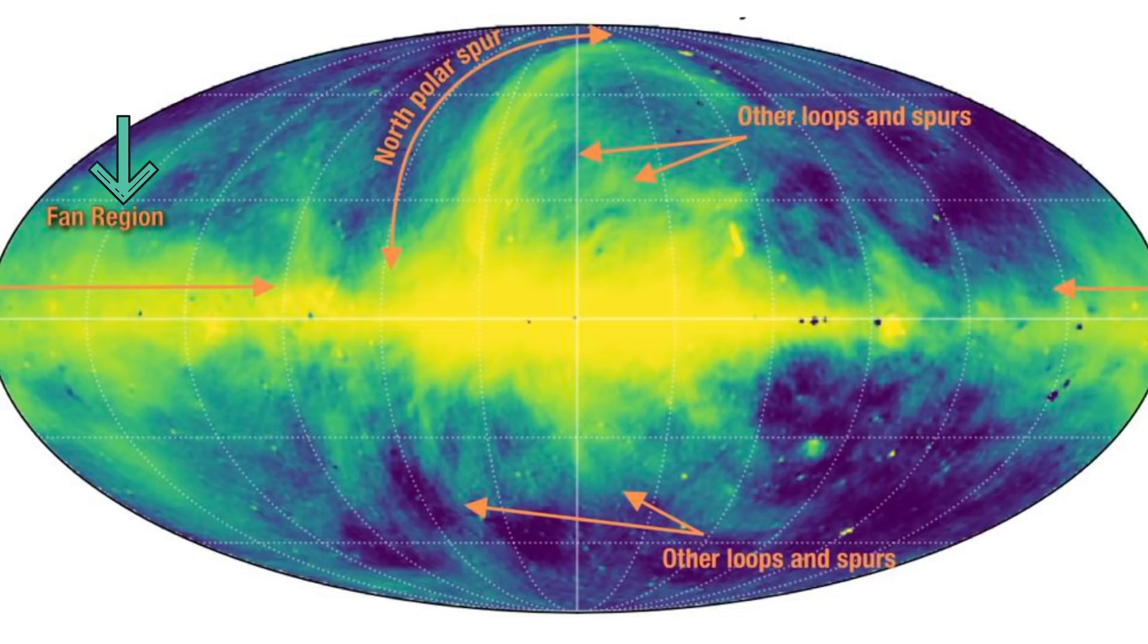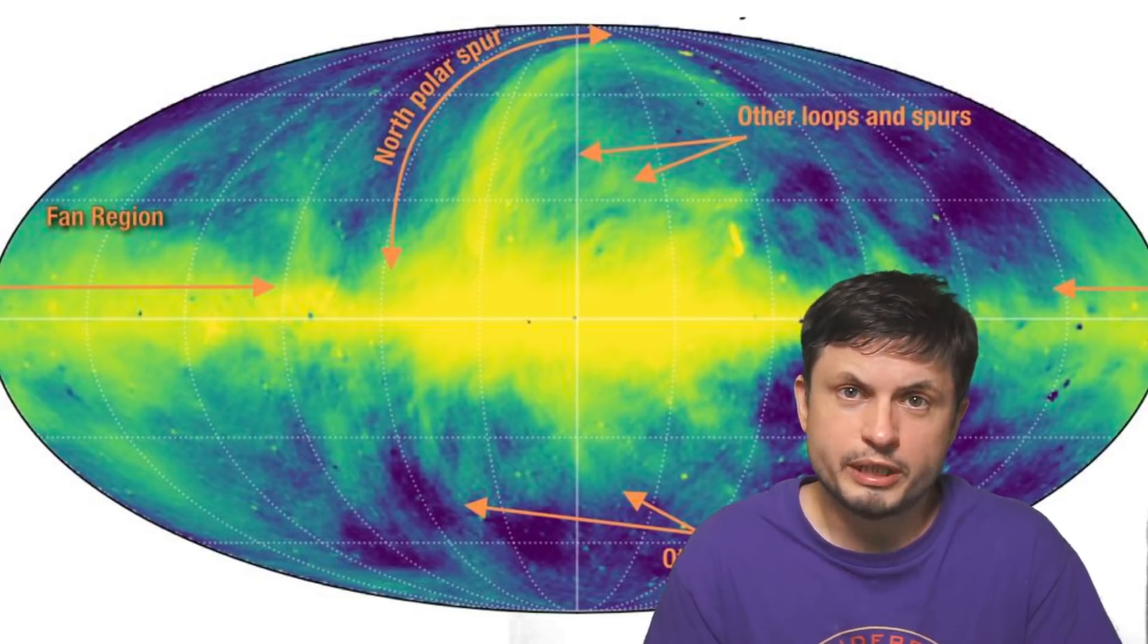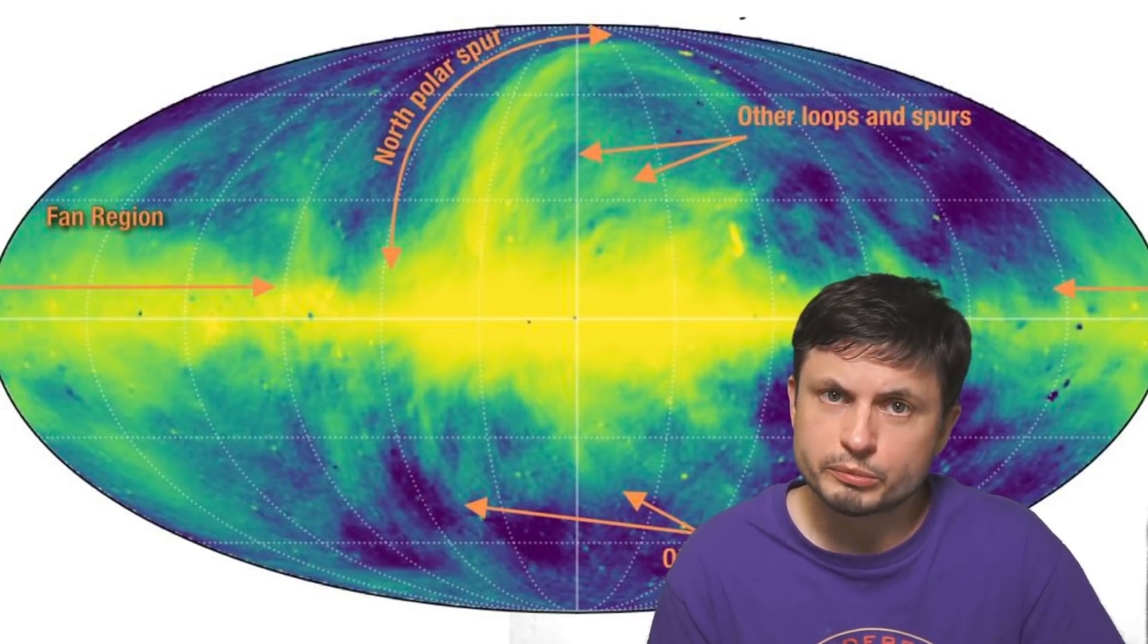For example, there is another region known as the Fan region that you see right here. And a lot of these arrows are pointing at some of the other unusual formations, different loops, and different spurs. Now, today we believe that in most cases they were probably produced by very powerful explosions. So it's quite likely that most of them probably came to be as a result of some sort of supernova or some kind of a similar, very powerful event.